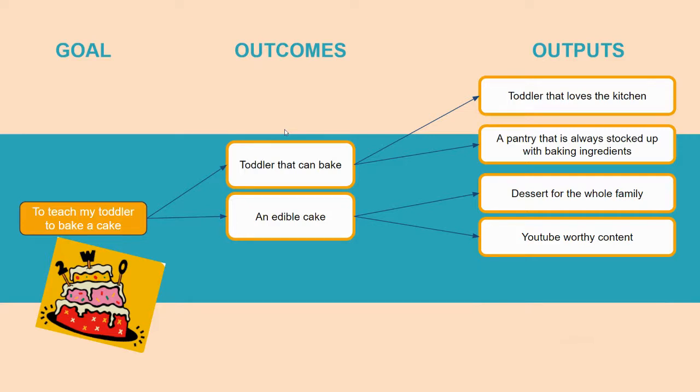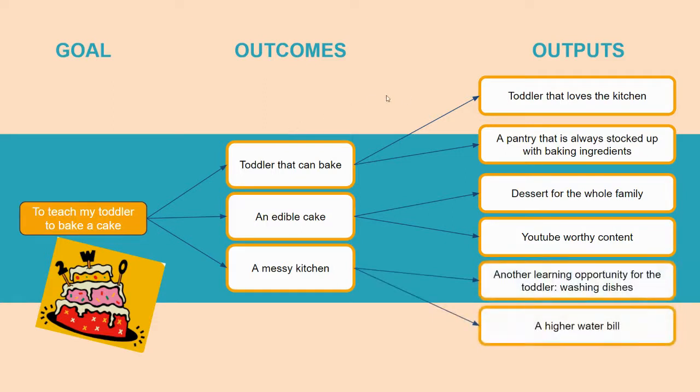And finally, another outcome could be a messy kitchen. This is definitely going to be the case. Whatever the outcome with my toddler and baking is, we will end up with a mess. And some of the outputs that could come from this are a learning opportunity for the toddler. They could learn how to wash dishes. And if I don't supervise that washing dishes exercise, I could end up with a higher water bill.